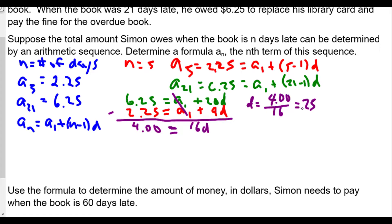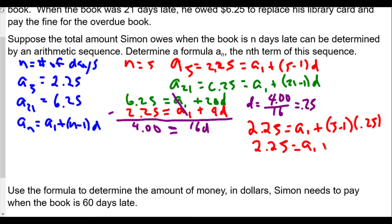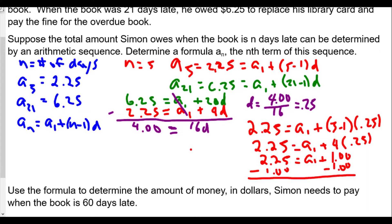Now that we know d equals $0.25, we can substitute back into either equation. Using a of 5: $2.25 equals a1 plus five minus one times 0.25, which gives us $2.25 equals a1 plus $1.00. Subtracting $1.00 from both sides, a1 equals $1.25.